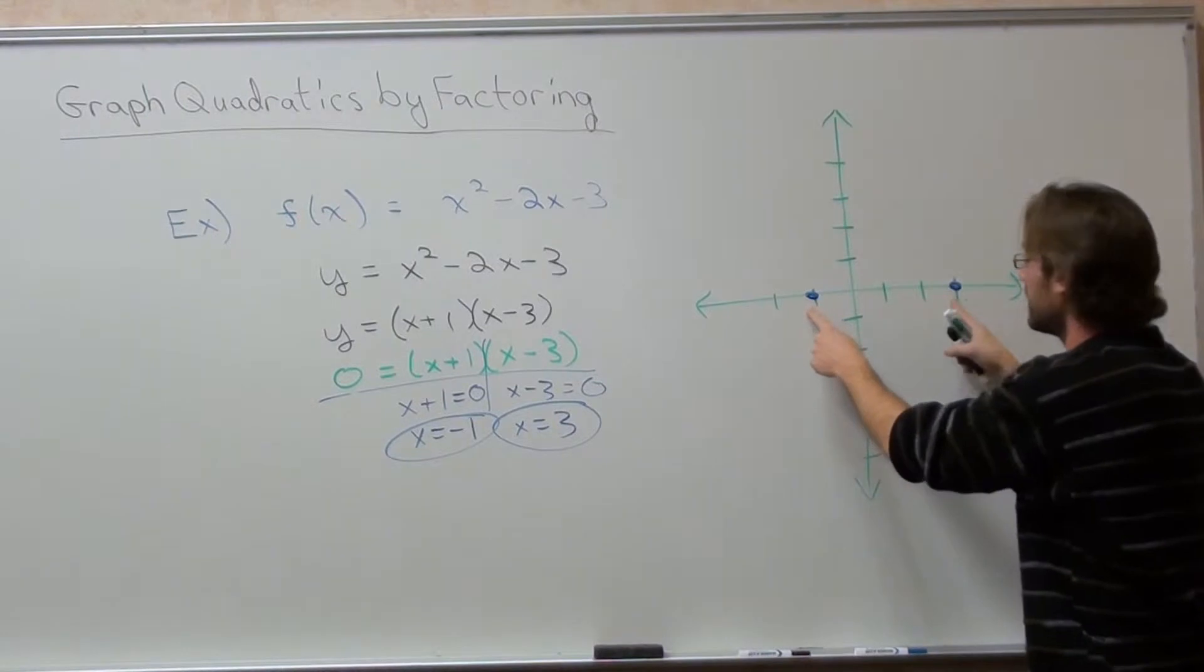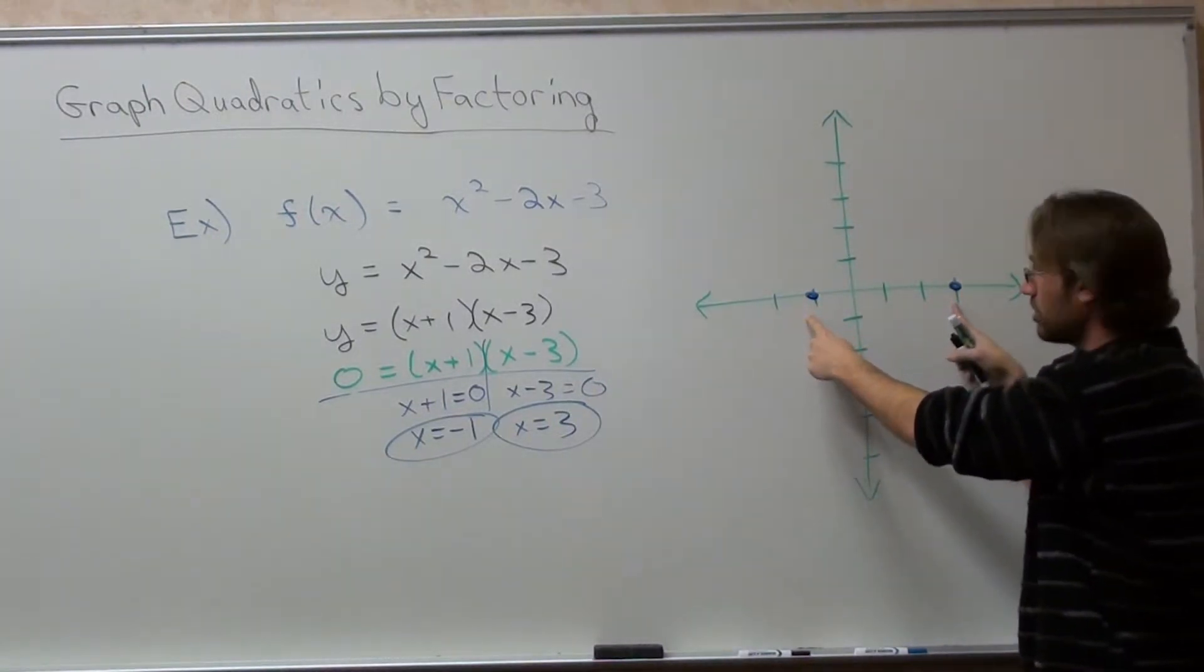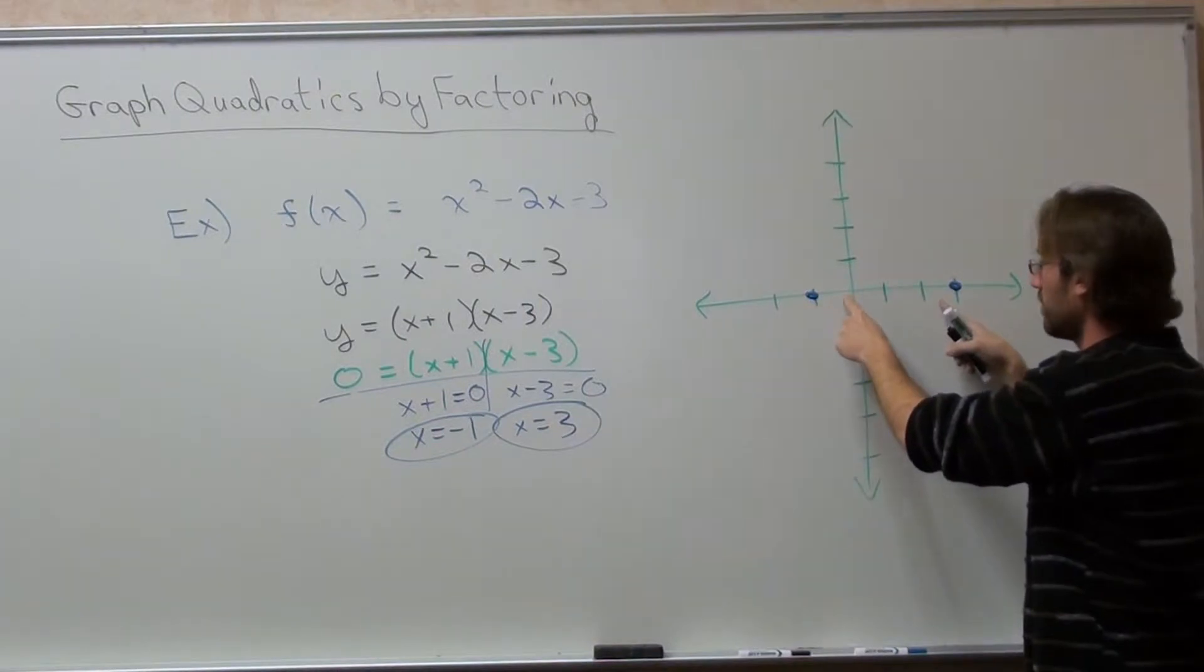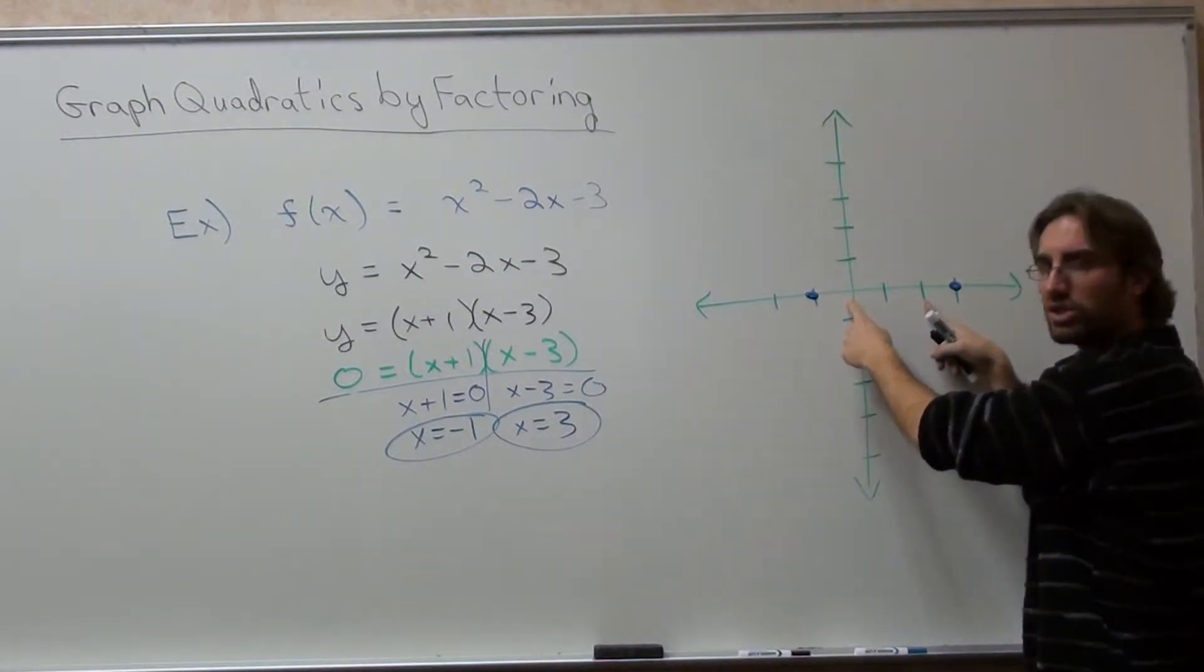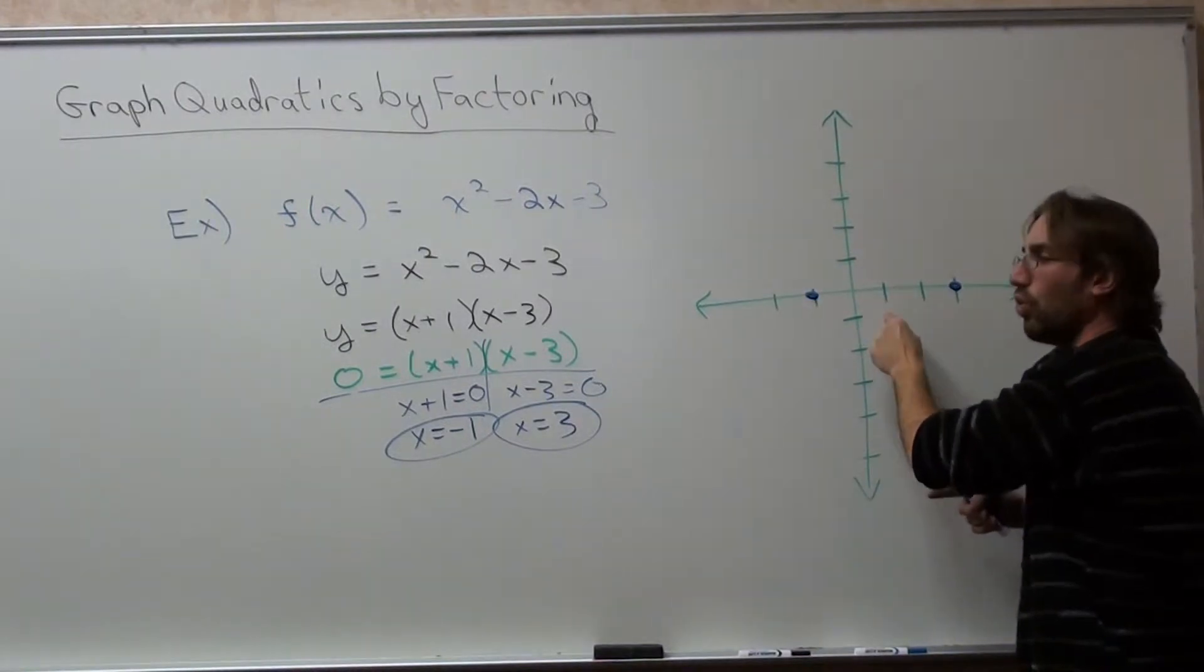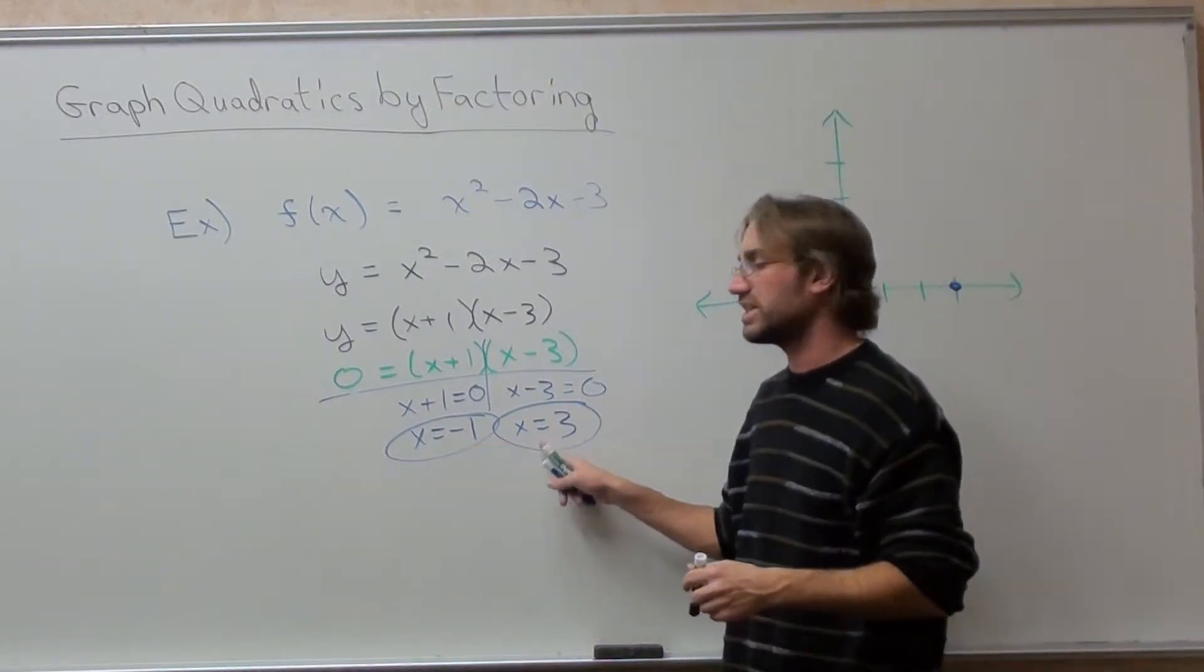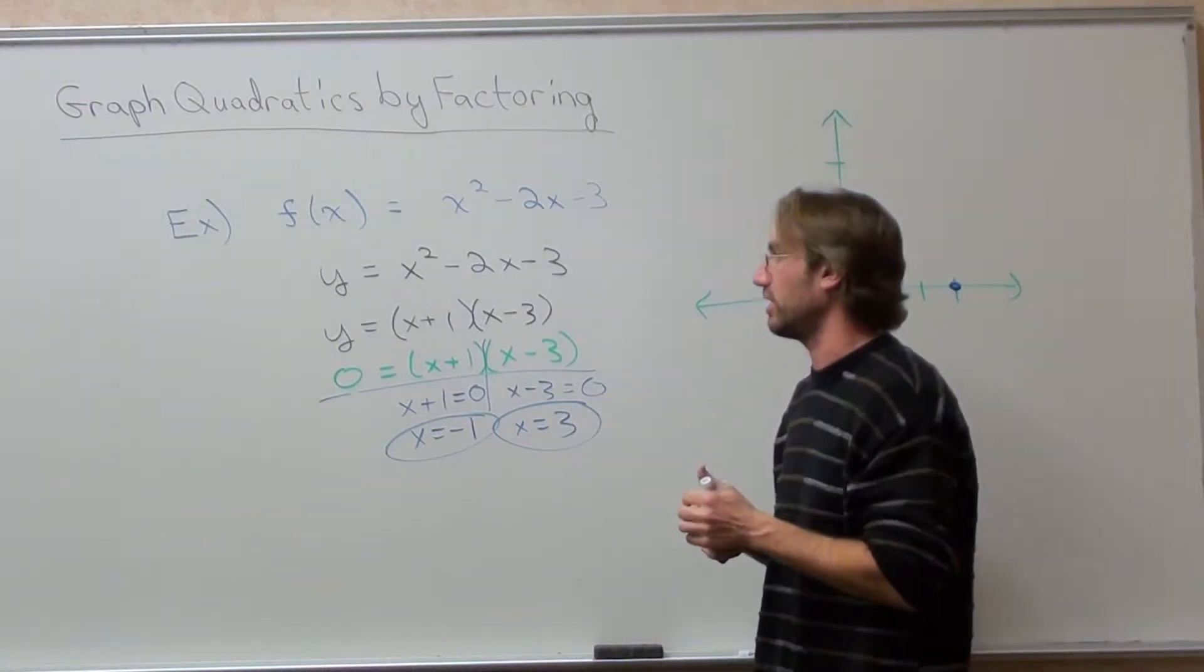Well, I know it hits at negative 1 and 3. So, if I want to find the middle of the graph, I just try to connect them. So, okay, I'm going to go 1 to the right, 1 to the left. Bam! I know the vertex is going to be at 1 because it's just going to be the middle of the graph. So, what I'm going to do from this point is, I know this is where it hits the x-axis, but I want to find the middle value.